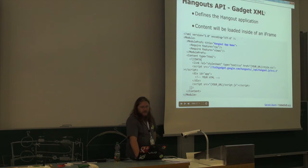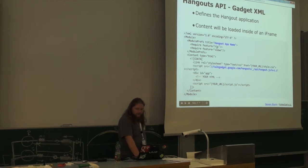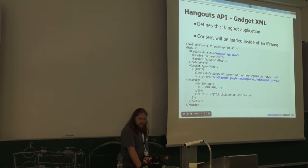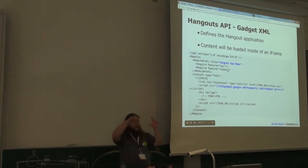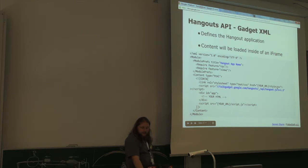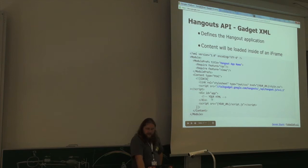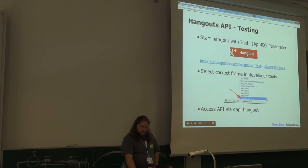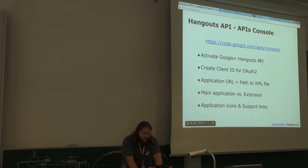If you define a Hangout application, you need an XML file which includes your Hangout app name. You need to request two features: RPC and Fuse. You need those features to allow communication from your iframe to the Hangout outside. Inside the XML you define your stylesheet, and what you need is the JavaScript file for the Hangouts API, which is currently at version 1.3.